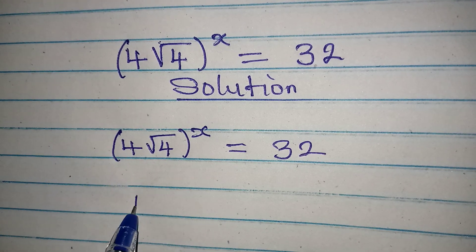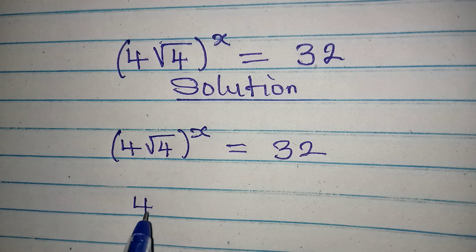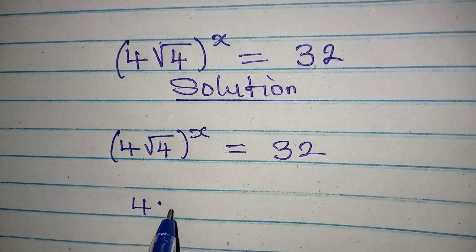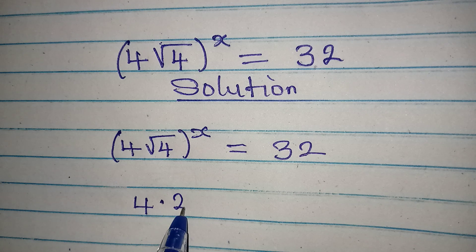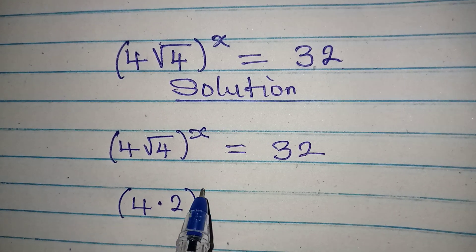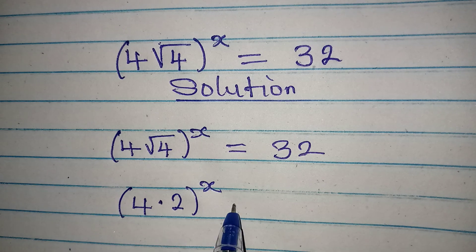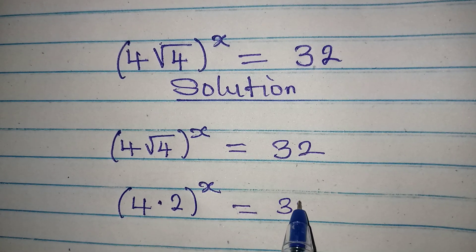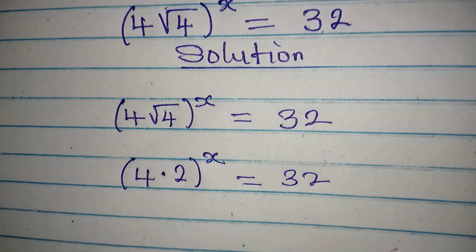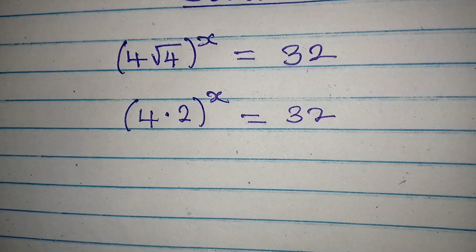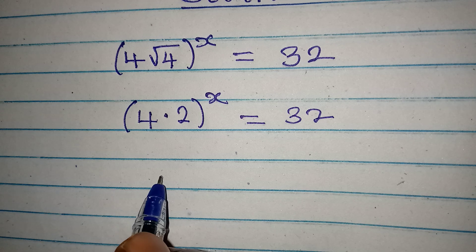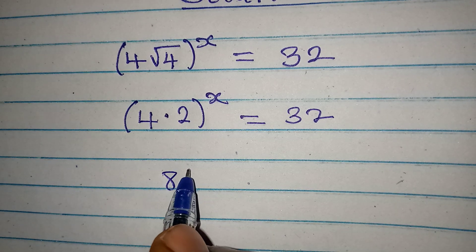Now, note that this is the same as 4 multiplied by the square root of 4, which equals 2. So we have 4 times 2, and the whole expression is raised to the power of x, equal to 32.